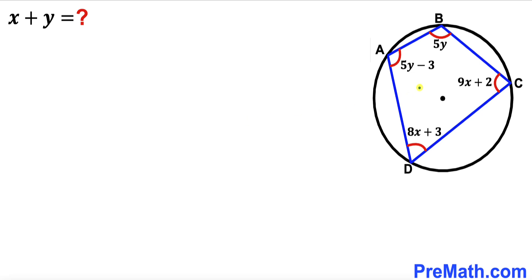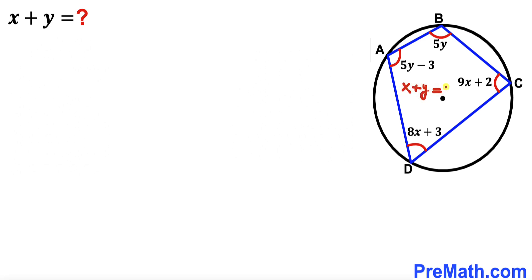Welcome to pre-math. In this video we have a cyclic quadrilateral ABCD fully inscribed in a circle. Angle A is represented by 5y minus 3, angle B is 5y, angle C is 9x plus 2, and angle D is 8x plus 3. Our task is to calculate the value of x plus y.